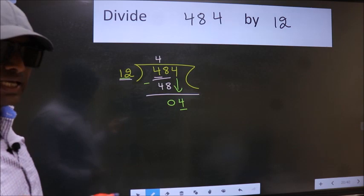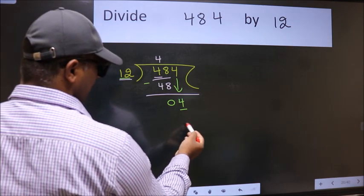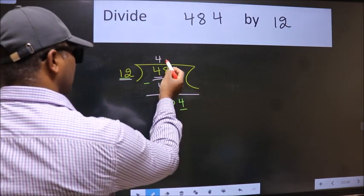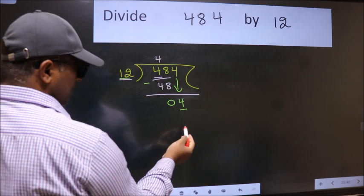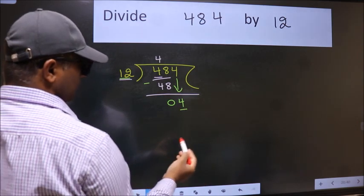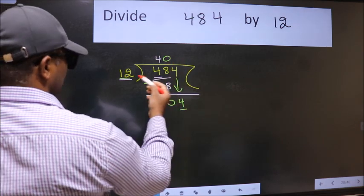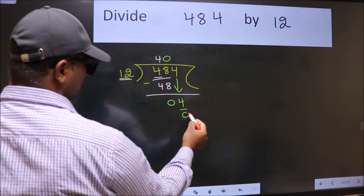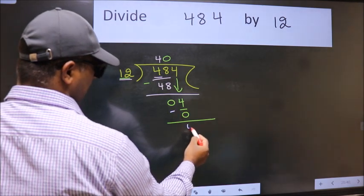Instead of that, what we should think of doing is which number should we take here. If I take 1, we will get 12. But 12 is larger than 4. So what we do is we take 0 here. So 12 into 0, 0. Now we subtract. We get 4.